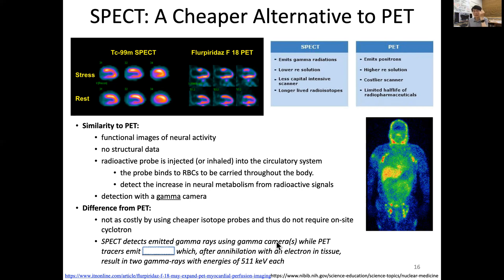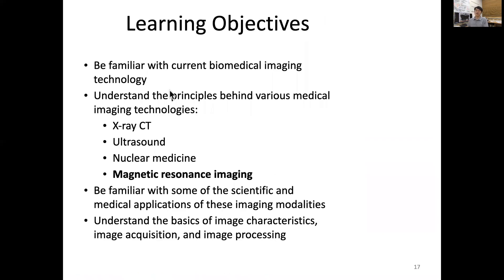SPECT detects emitted gamma rays using a gamma camera directly — that's why it's called single photon emission CT, because it's one single gamma ray. While PET tracers emit positrons, which after annihilation with an electron inside tissue result in two opposing gamma rays, each with an energy of about 511 kiloelectron volts. Next time we will discuss magnetic resonance imaging. Thank you for your attention.